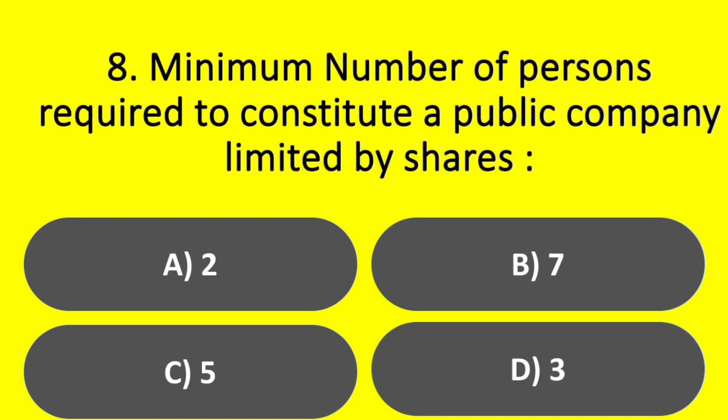Question. Minimum number of persons required to constitute a public company limited by shares: Option A – 2. Option B – 7. Option C – 5. Option D – 3. Answer: Option B – 7.